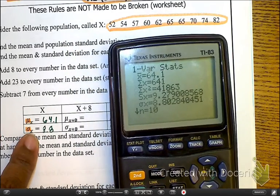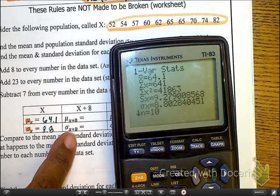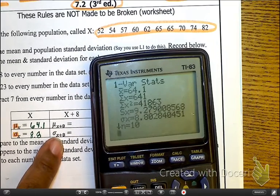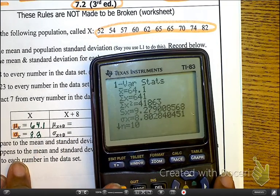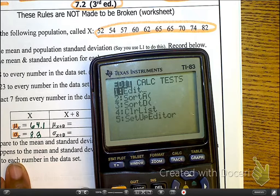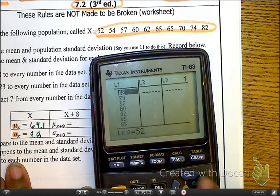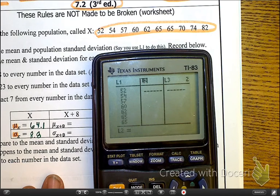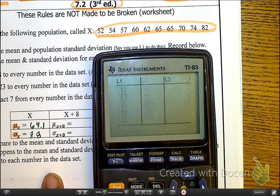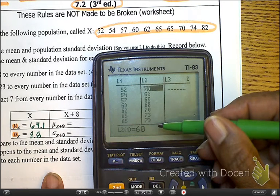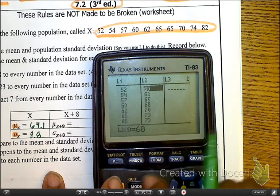Okay, so now we have this. Now, the next one says I want to add 8 to every one of them. So, as I go back to my list, go back to Stat, Edit, I'm highlighting my L2. I'm going to say L1 plus 8, and then press Enter. Here are my new values. Then I'm going to quit out of it.